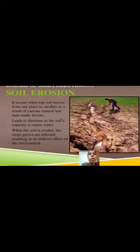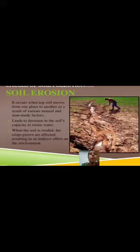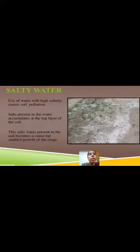Soil erosion means it occurs when topsoil moves from one place to another as a result of various natural and man-made factors. It leads to decrease in the soil's capacity to retain water. When the soil is eroded, the crops grown are affected, resulting in an indirect effect on the environment.